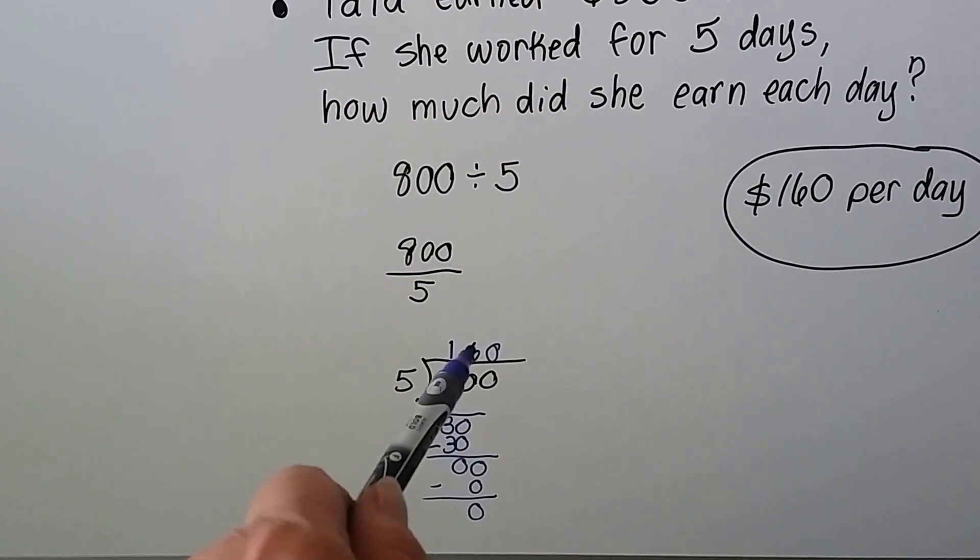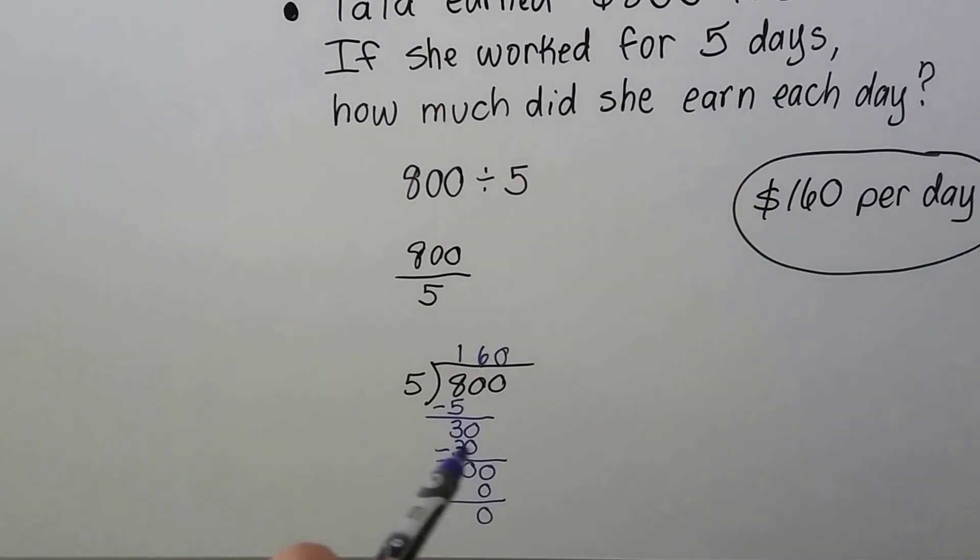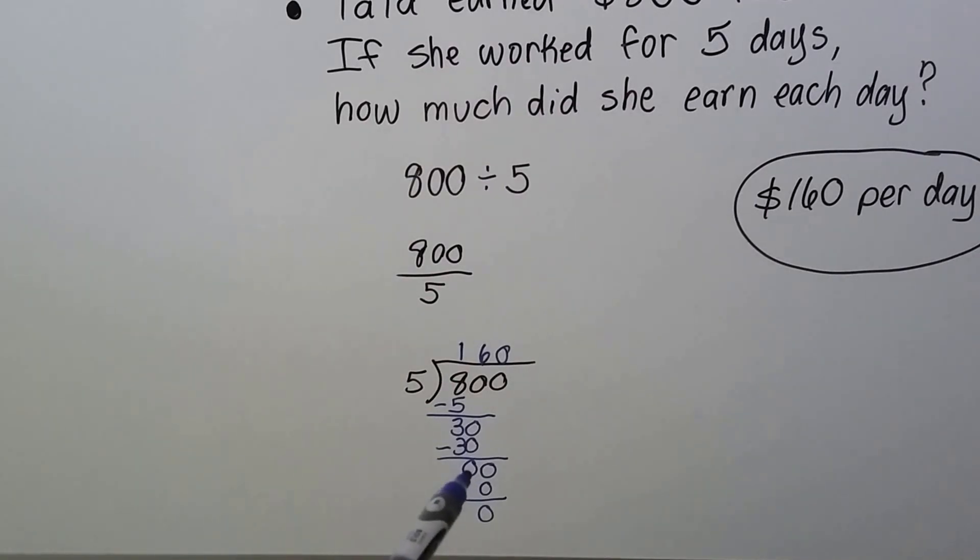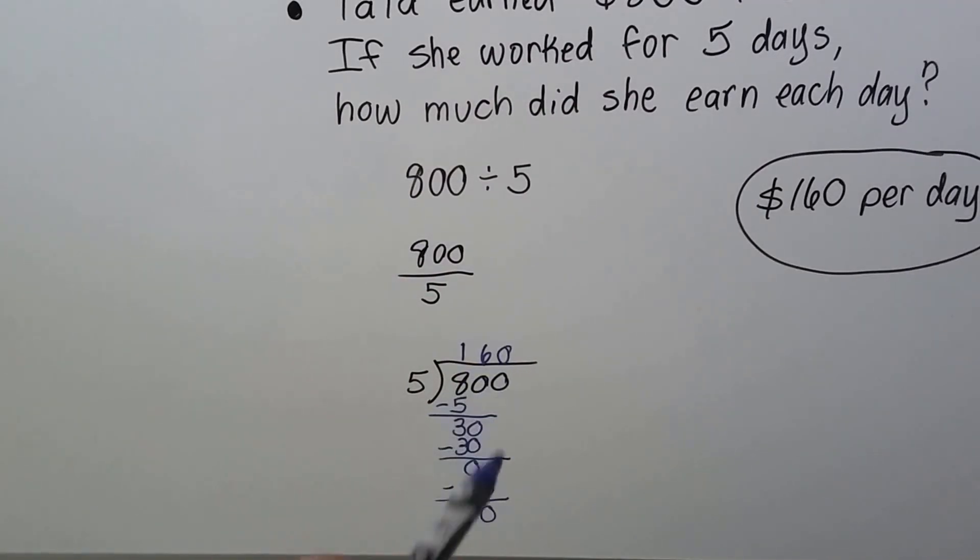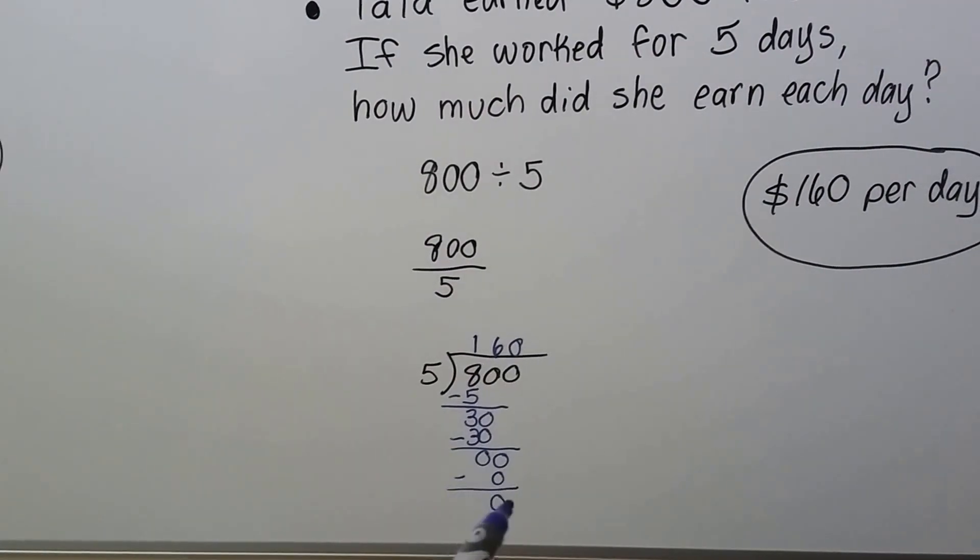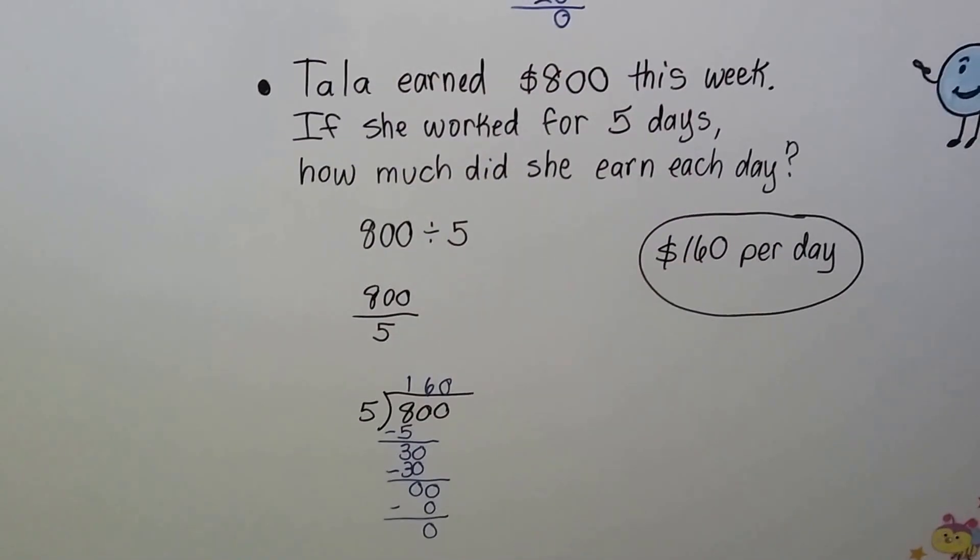5 goes into 30 six times. And 5 times 6 is 30. We subtract that and get a 0. We drop this 0 down. 5 goes into 0 how many times? 0 times. So we do 5 times 0 and write our 0 and do our subtraction. We get a remainder of 0. So we know she made $160 per day.